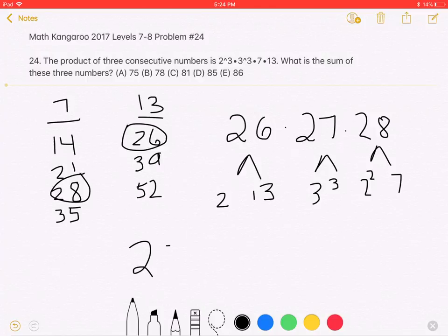Therefore, to get the answer, we must add 26+27+28 to give us a sum of 81, which is answer choice C.